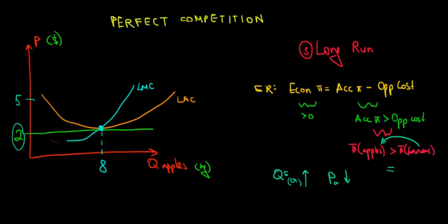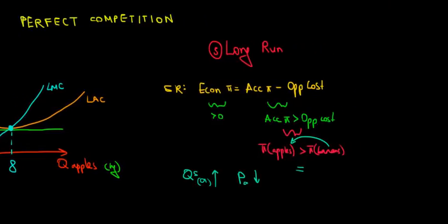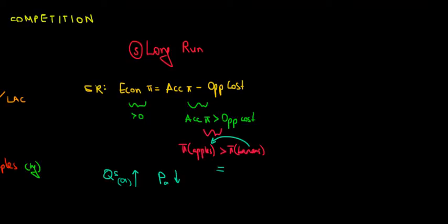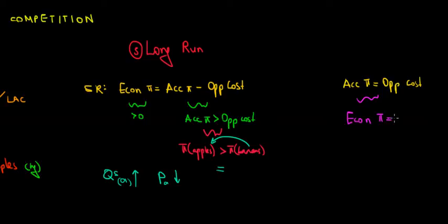If we have this equation holding — where accounting profit equals the opportunity cost, meaning the profit from apples equals the profit from bananas — we can see mathematically that the difference between them is going to be zero. By definition, that means a zero economic profit: economic profit equals zero. That's the condition for the long run.